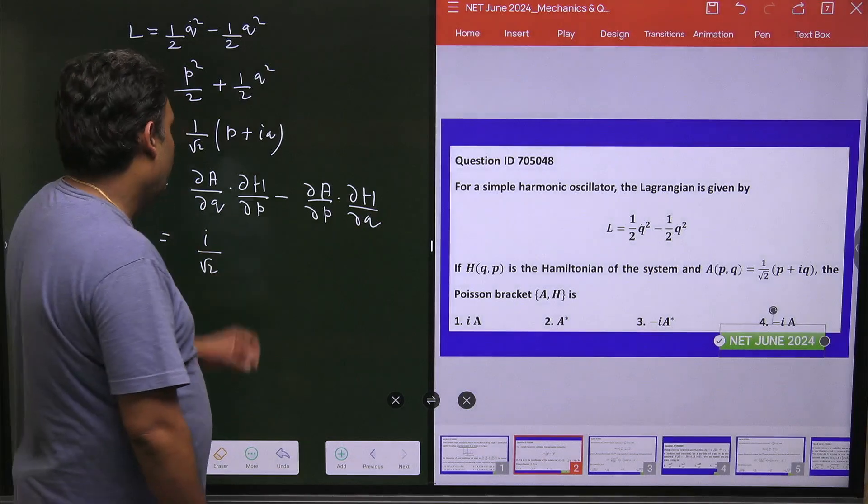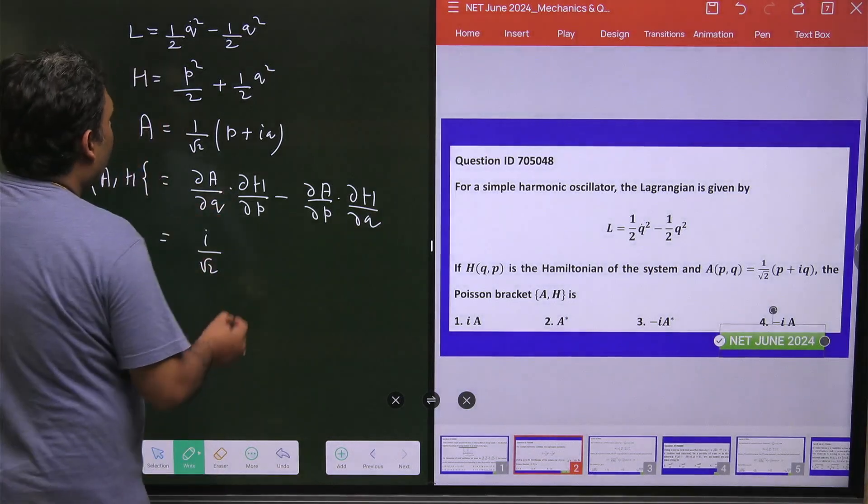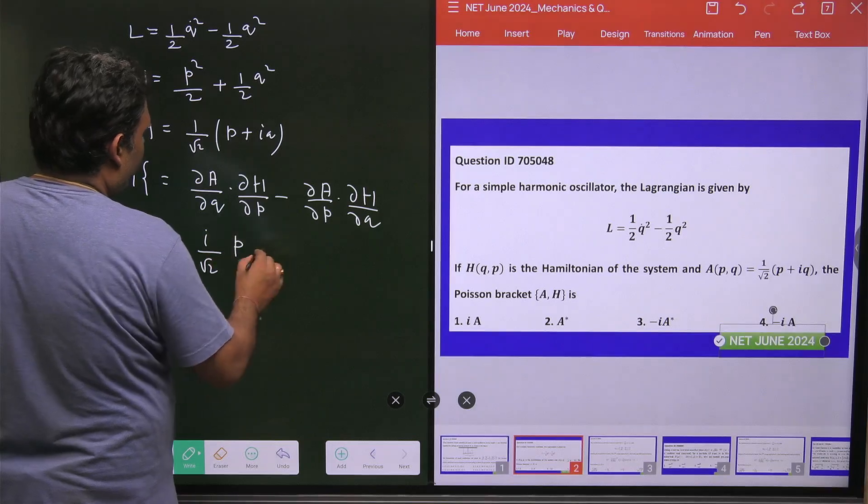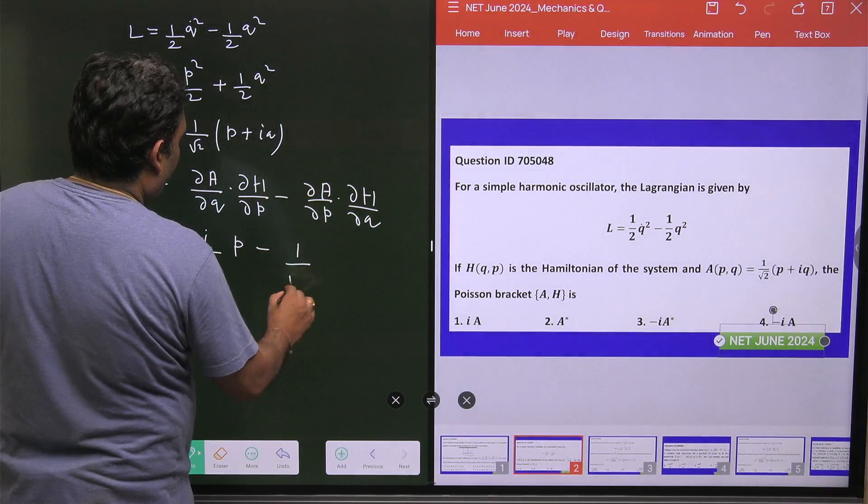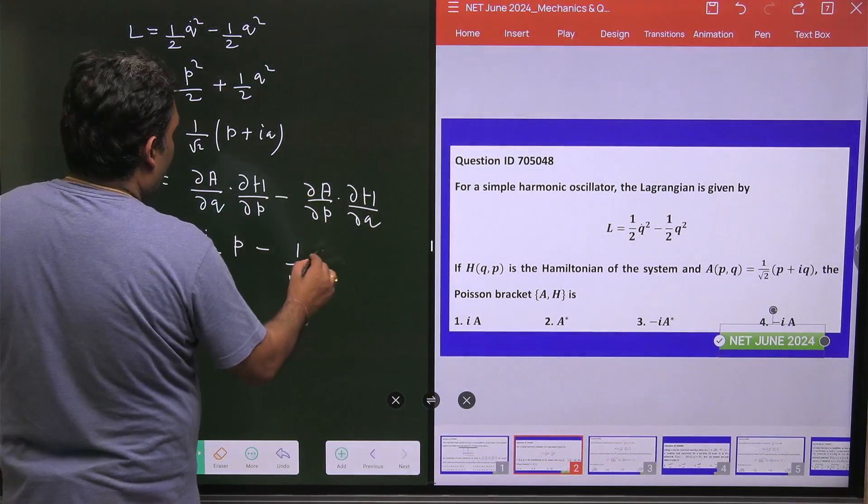You have to solve it very carefully at this particular moment. ∂H/∂p = p, ∂A/∂p = 1/√2, and ∂H/∂q = q.